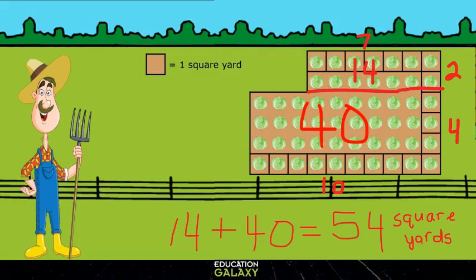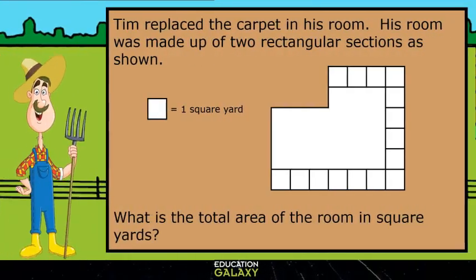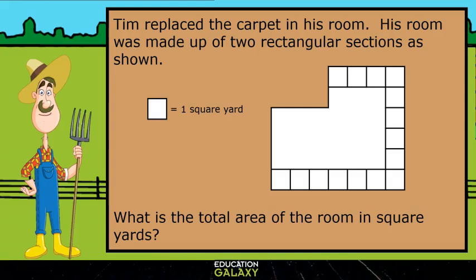Now it's time to try some word problems. Tim replaced the carpet in his room. His room was made up of two rectangular sections as shown. What is the total area of the room in square yards?